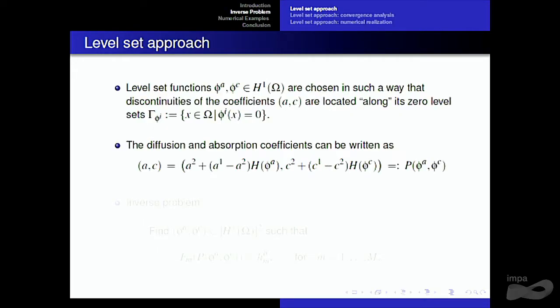How do we treat this problem? We consider a level set approach. We want to recover two coefficients, A and C, so we consider two level set functions, φ_A and φ_C, which are in H1. These level set functions are chosen so that the discontinuities of the coefficients are located along their level sets. The diffusion and absorption coefficients can then be written using the Heaviside function H, which takes value 0 for negative numbers and value 1 for positive numbers. So if φ is positive, A takes the value A1; if φ is negative, A takes the value A2. The same holds for coefficient C.